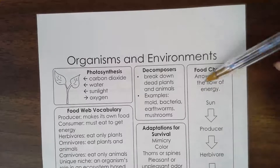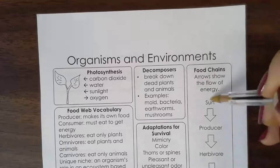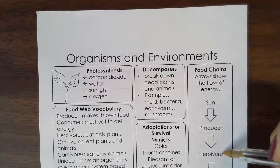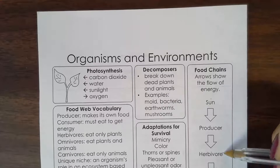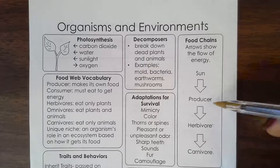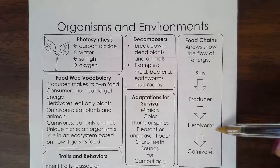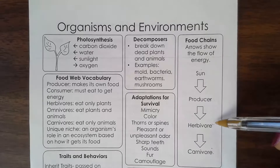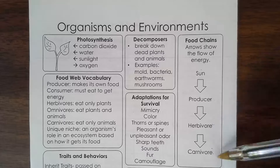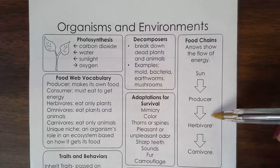Food chains: arrows show the flow of energy — where the arrow goes, the energy flows. Everything starts at the sun, then goes to the producer, then the herbivore, then the carnivore. Producers are the little guys like plants that make their own food. The herbivore only likes to eat grass or plants. Carnivores are the meat eaters who will eat anything else.